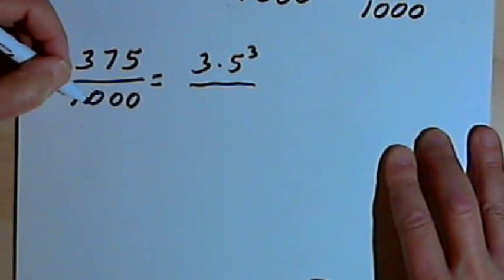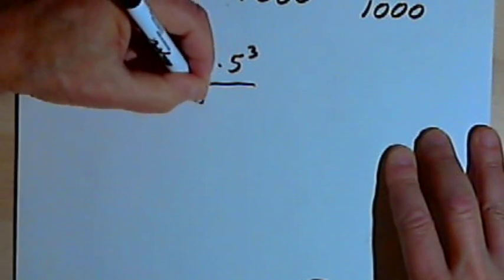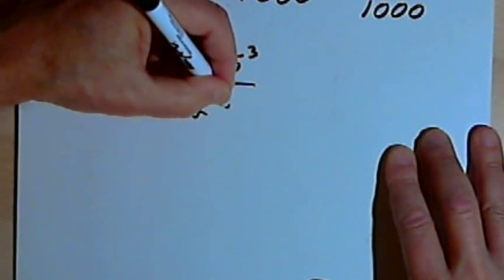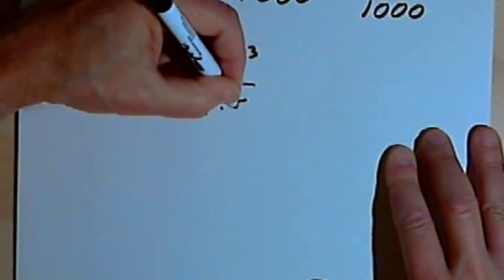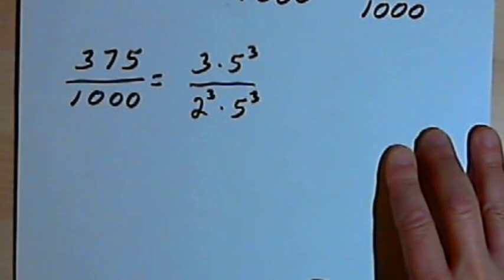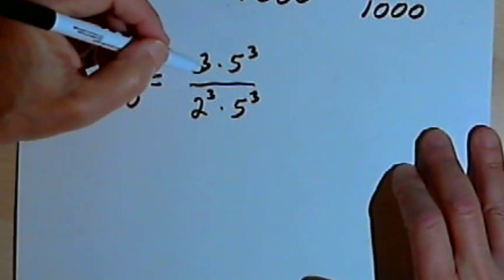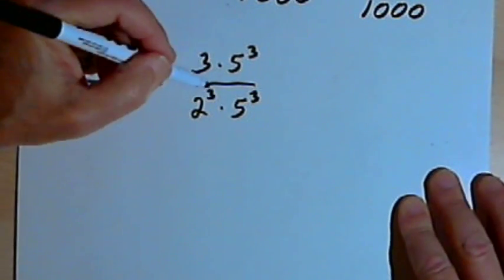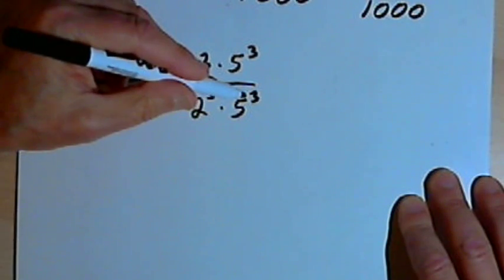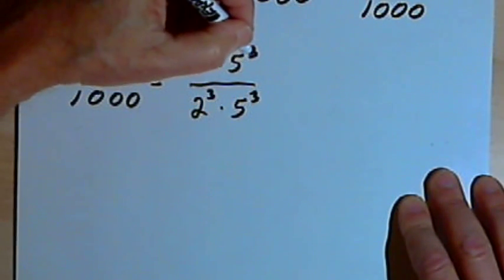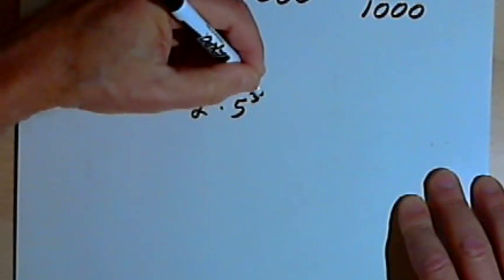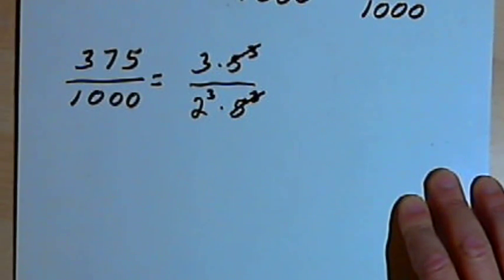And the denominator 1,000 could be broken down into the prime factors 2 to the third and 5 to the third. So now I've got 3 times 5 to the third over 2 to the third times 5 to the third. So I can cancel out a 5 to the third in both the numerator and the denominator.